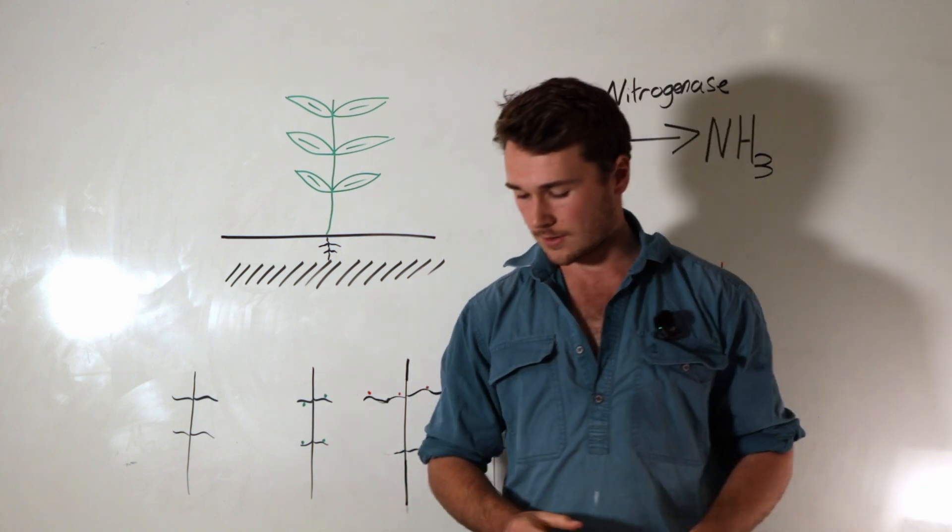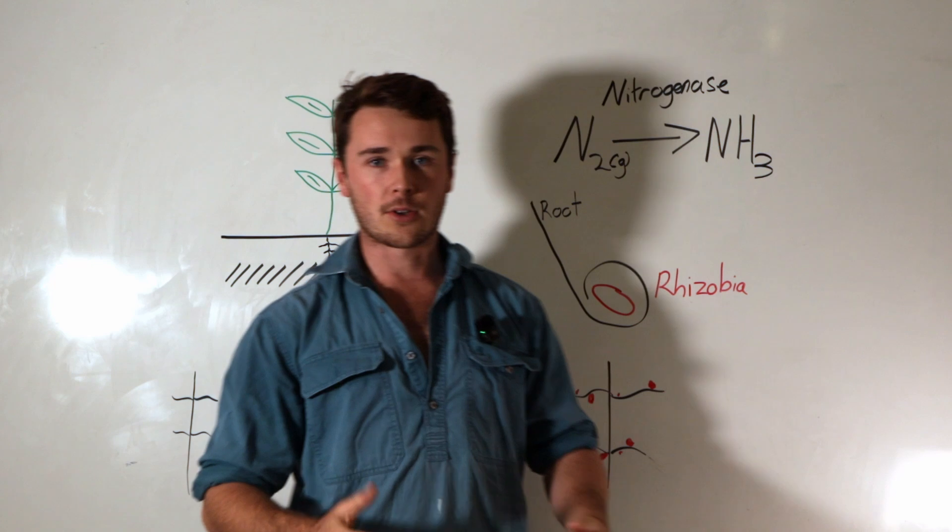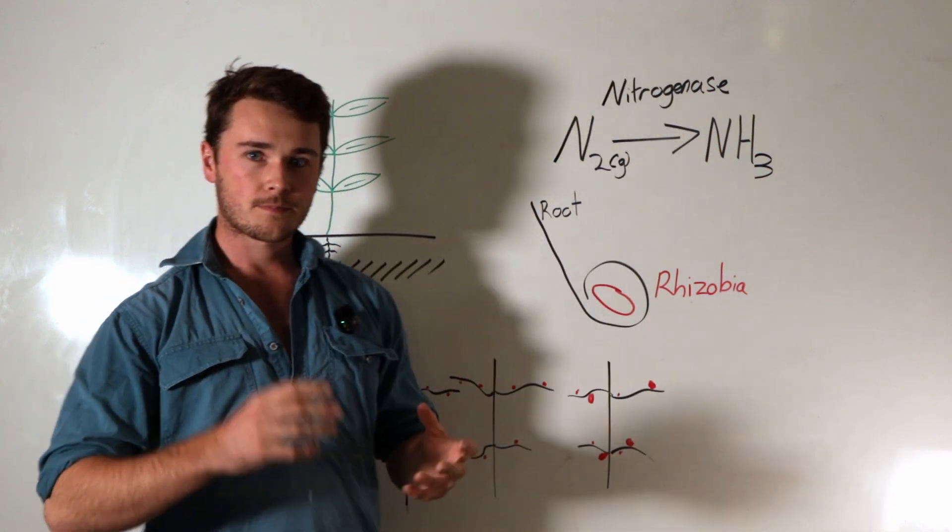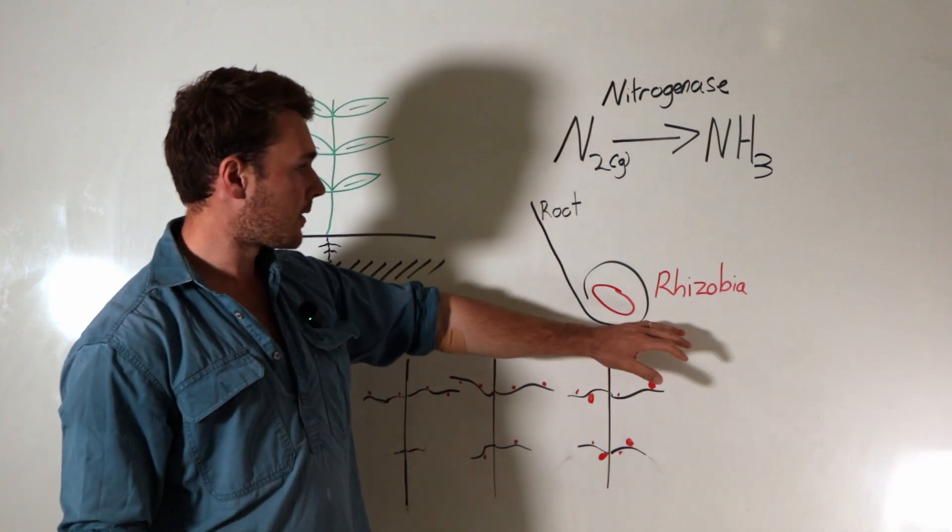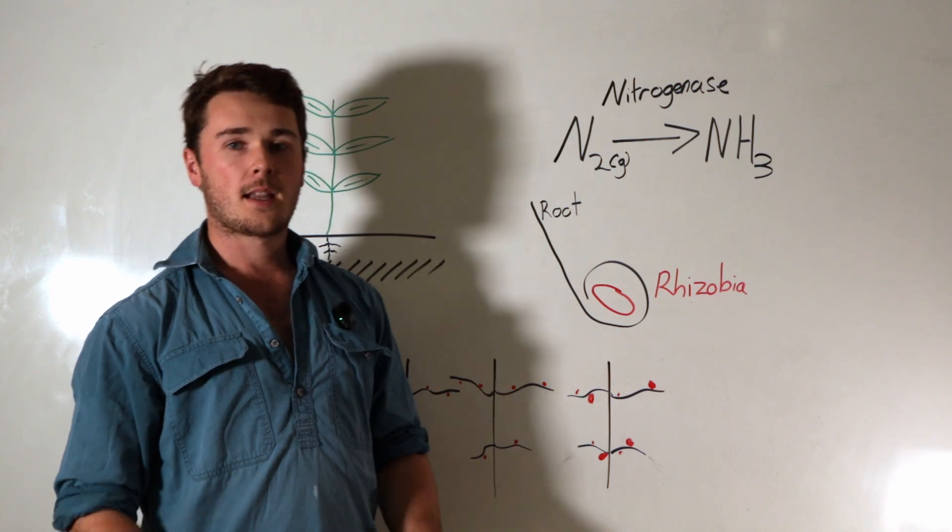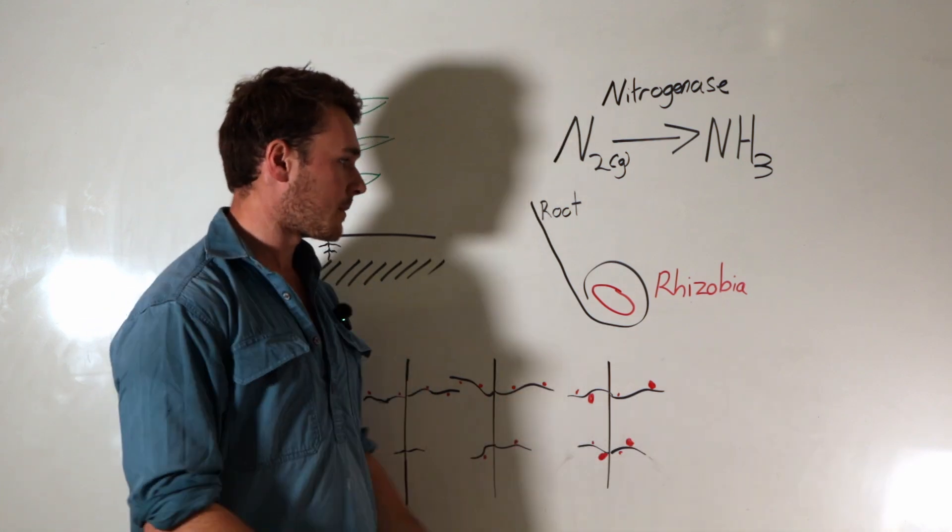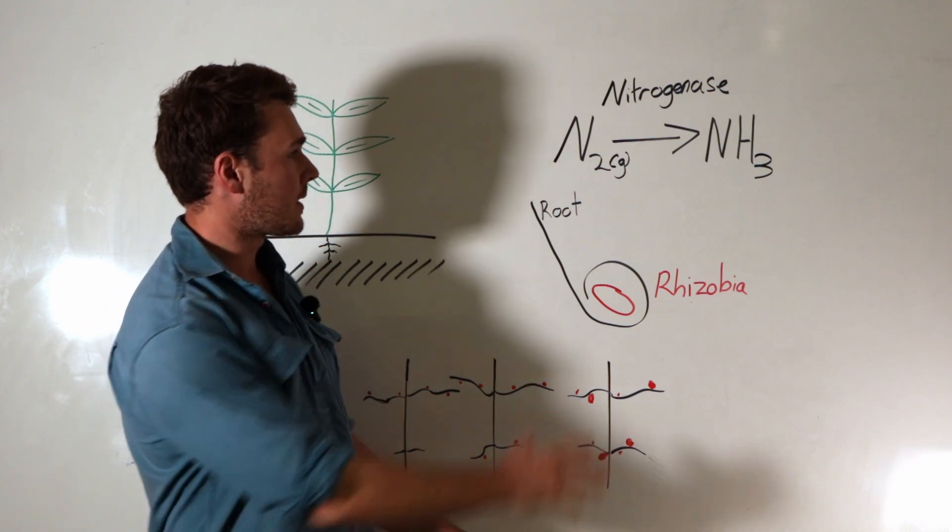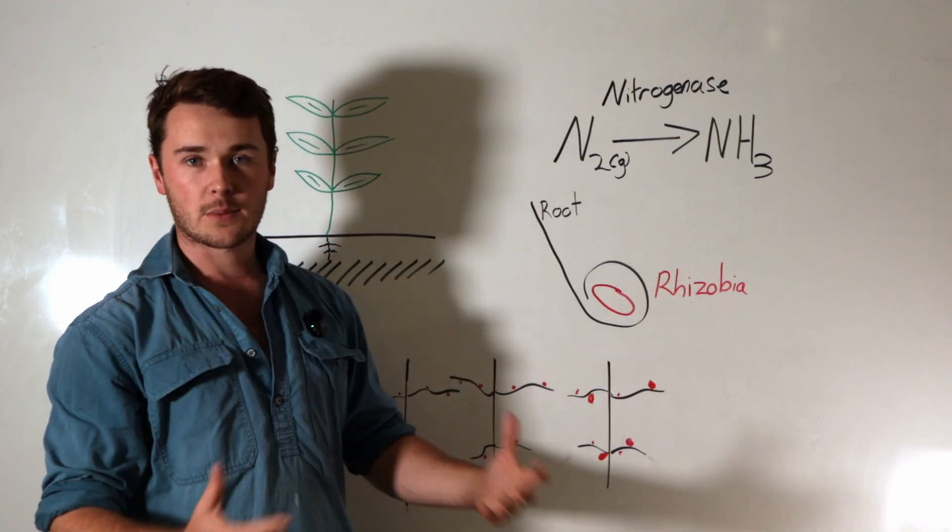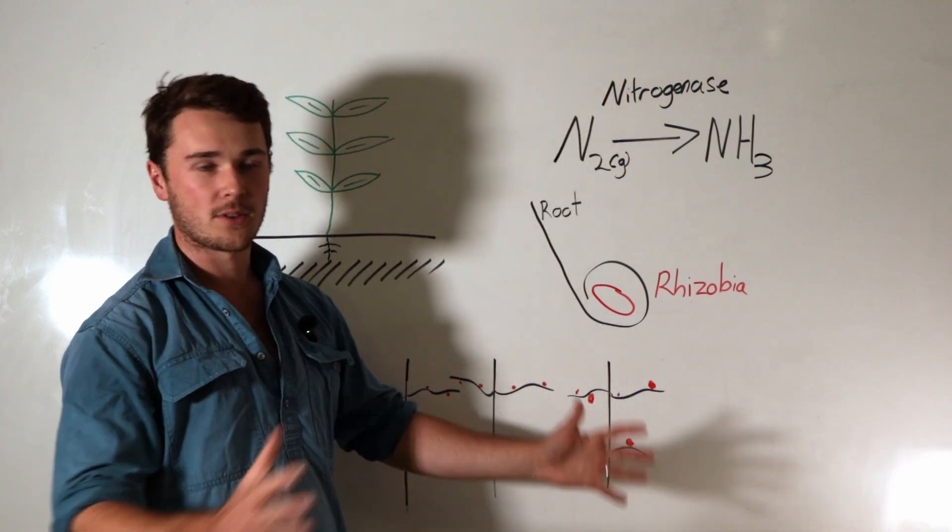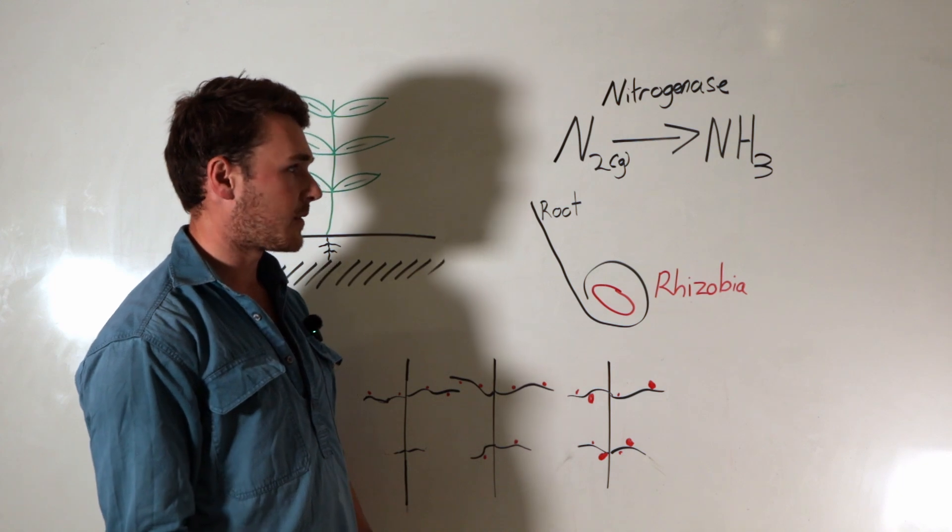The very first thing we need to talk about is what's the actual process and why does this happen. The legume root finds these bacteria called rhizobia bacteria. These bacteria are quite special because they can fix nitrogen out of the atmosphere. The atmosphere has about 78% nitrogen gas, so there's heaps of nitrogen in the atmosphere.